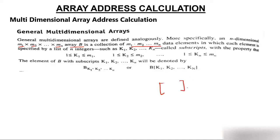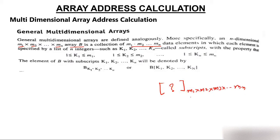For example, if you have a 5×4 matrix with 5 rows and 4 columns, there are 20 elements. Similarly, if a matrix has dimensions M1×M2×...×Mn, the total number of elements is the product M1×M2×...×Mn. The subscripts K1, K2, ..., Kn indicate the position whose address you want to calculate.